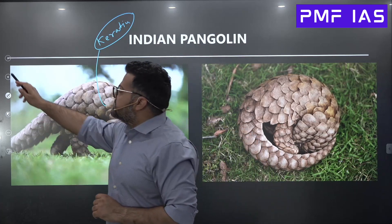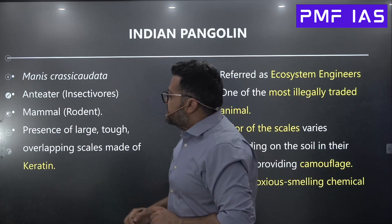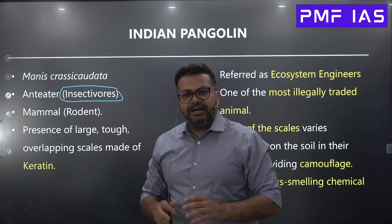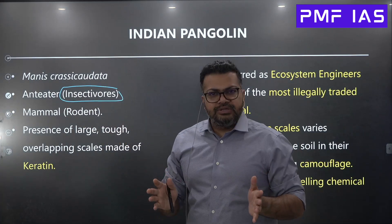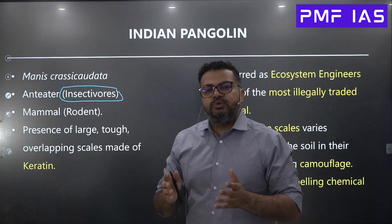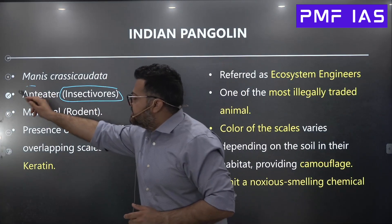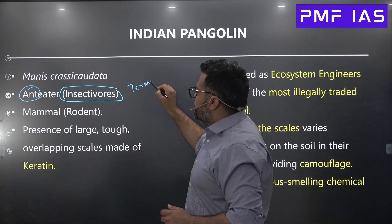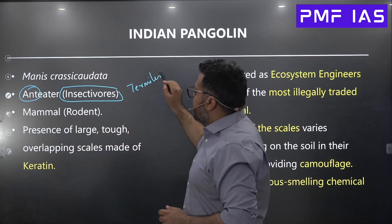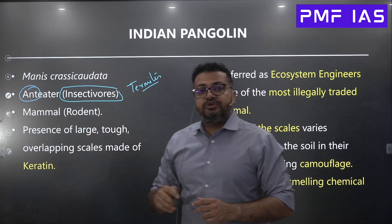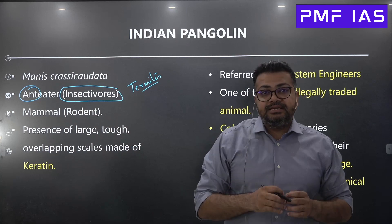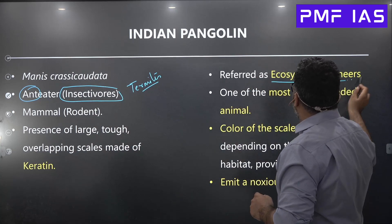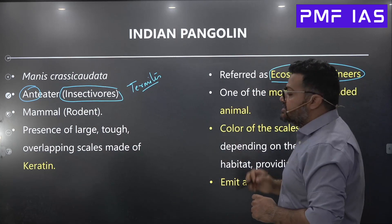The Indian pangolin is an insectivore — in fact, all pangolins are insectivores. They mostly eat ants as well as termites.